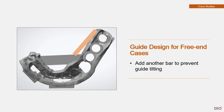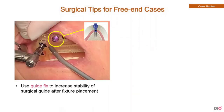Second, add one more reinforcement bar connected to the first reinforcement bar and the free end part. This additional bar in the lateral direction prevents the bending of the guide and tilting. The third is the surgical tip: the implant is placed in the relatively flat or stable part of the bone, and the guide fix pin is fastened on it. This method improves the bonding force between the guide and the teeth, thereby reducing the tilting of the guide in the free end case.